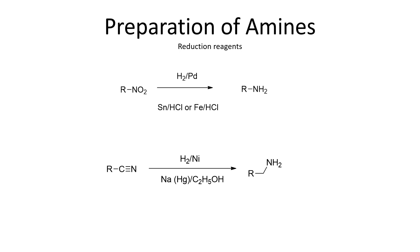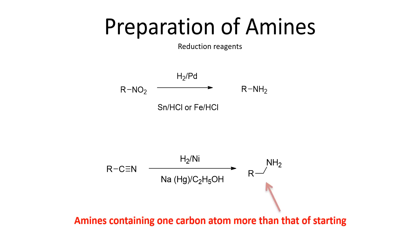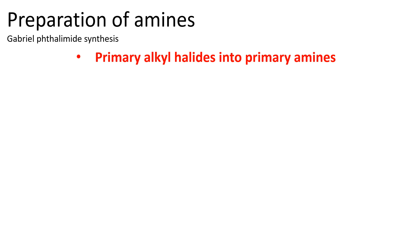The second method is nitrile reduction — after reduction, the final product is an amine. The third method is Gabriel phthalimide synthesis, where a primary alkyl halide is converted to a primary amine. Alkyl halides belong to the 17th group elements — fluorine, chlorine, bromine, and iodine. This halide, in the presence of phthalimide, undergoes the reaction.